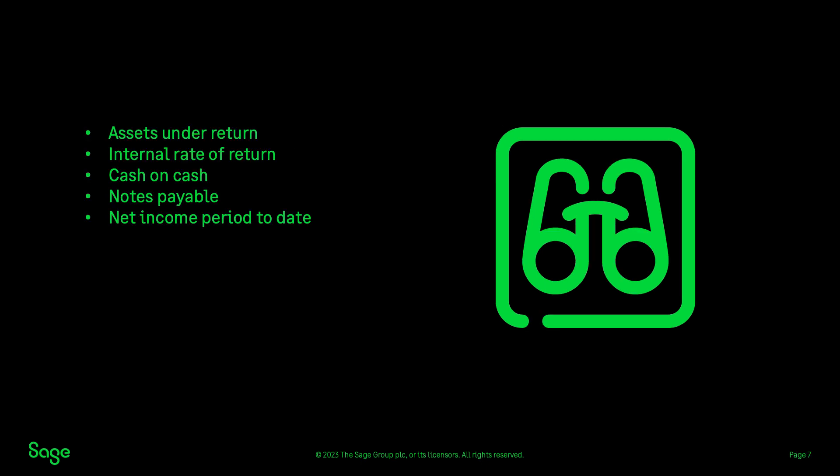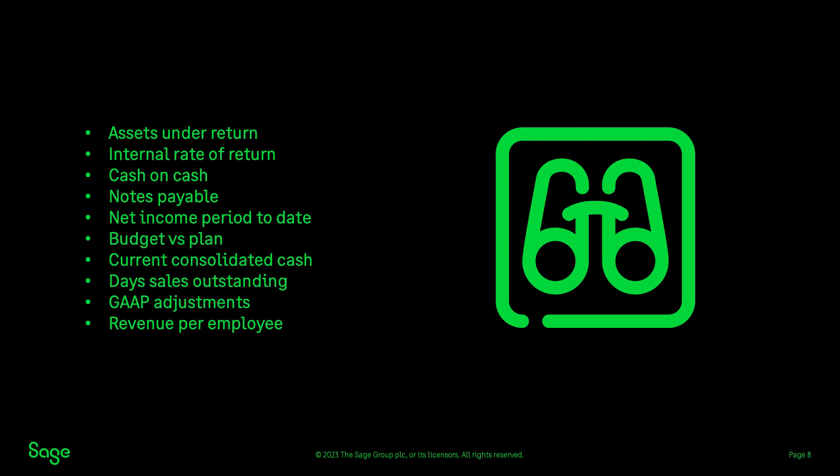For example, one of our users, a family-owned real estate investment firm, monitors assets under management, internal rate of return, cash on cash, notes payable, and net income period to date — which aren't available in QuickBooks unless you're using spreadsheets. Your key metrics might include these and others, both financial and operational, that help business leaders track the health of your organization. Other metrics might include budget versus plan, current consolidated cash, day sales outstanding, gap adjustments, and revenue per employee.